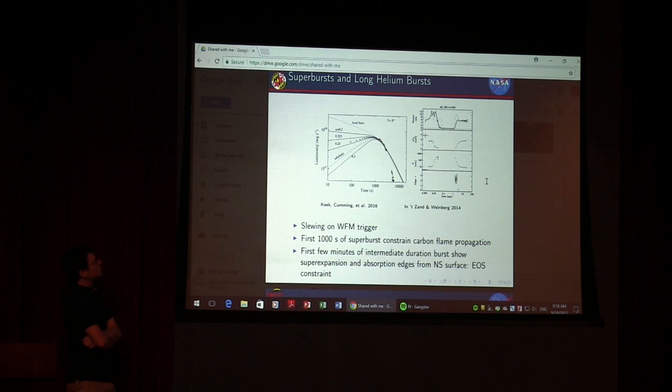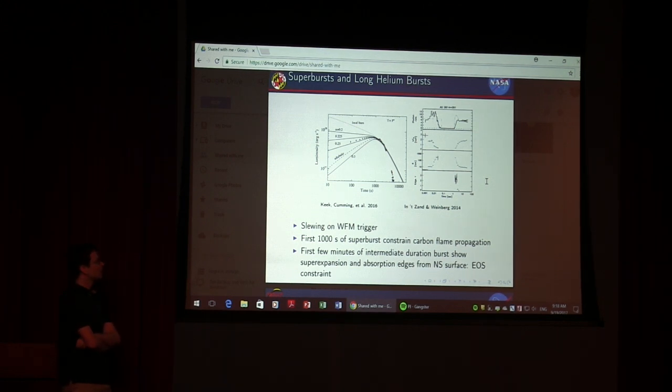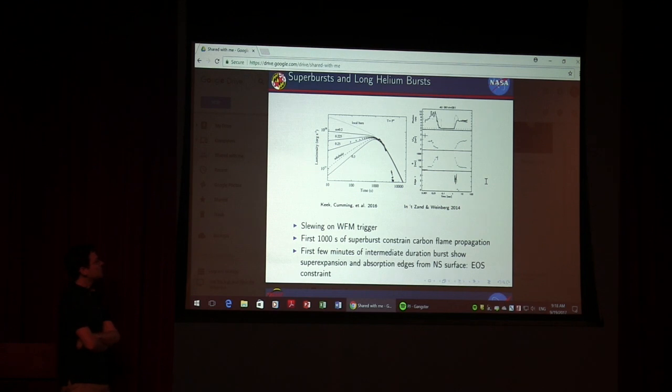These superbursts and long helium bursts that we call intermediate duration bursts are very rare. We've seen 25 superburst candidates, only two in any detail with PCA and RXTE. The rest all with wide field cameras and all-sky monitors. A few dozen intermediate duration bursts. But when we see them, they show great detail we don't see in shorter bursts.